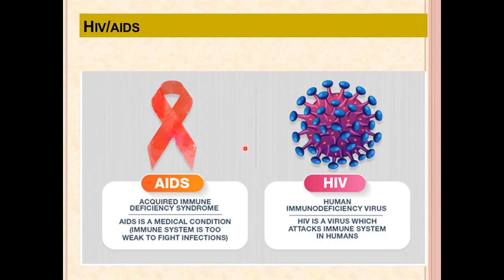HIV is Human Immunodeficiency Virus — the virus that attacks the immune system causing the disease. On the other hand, AIDS, otherwise called Acquired Immunodeficiency Syndrome, is a group of diseases that occurs only at a later stage in an individual who is infected with this virus.